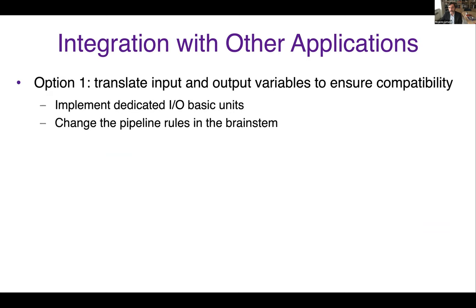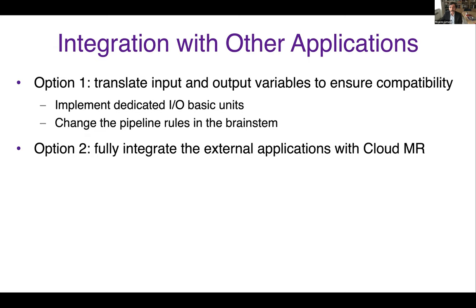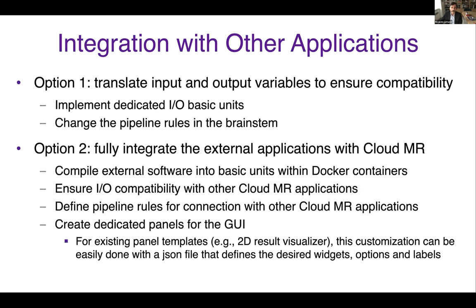Thanks to the modular interface, it is not difficult to integrate external applications within CloudMR, and we can do this in two ways. The simplest way is to translate the input and output variables to ensure compatibility, which only requires implementing dedicated input-output basic units and changing the pipeline rules in the brainstem. We could also decide to fully integrate an external application — this is what we have done with Camry, the CloudMR version of the Pseudo-MRI simulator from Penn State. This second option requires compiling external software into basic units within Docker containers, defining pipeline rules for connection with other CloudMR applications, and creating dedicated panels for the GUI. For existing panel templates, this customization can be done with a JSON file that defines the desired widgets, options, and labels. For different panels, such as 3D visualizers, we need to implement them separately.